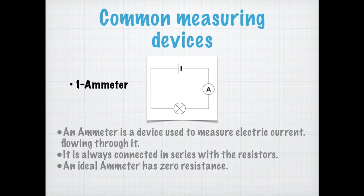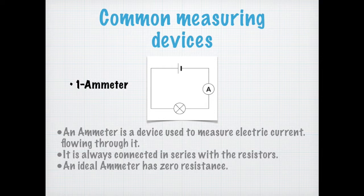Or, I can say current and potential difference are directly proportional to each other. If the resistance increases, the potential difference is going to split. Because of that, if you calculate using Ohm's law, you'll find that the current is going to be different from what you were supposed to get, and your readings are going to be disturbed.